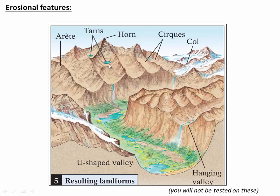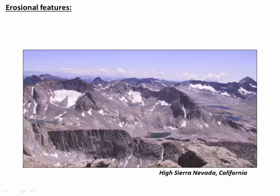Cirques often have little lakes at their foot called tarns, sometimes contained by a small glacial moraine. If you go backpacking in the Rockies, Sierras, or Cascades, you'll frequently encounter this setting: a beautiful lake at the base of a cirque, below a triangular-shaped peak called a horn eroded by glaciers on all sides. Between the valleys you'll often see knife ridges called arêtes. That's very typical glaciated terrain.